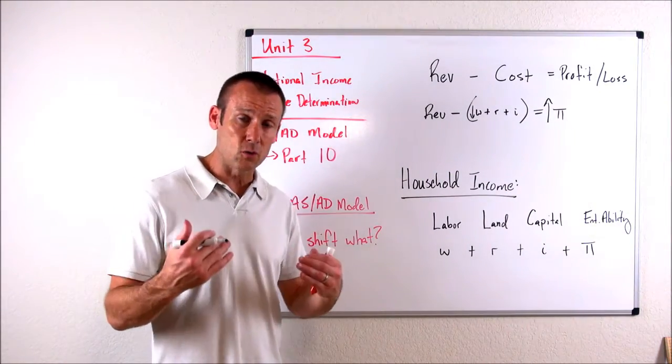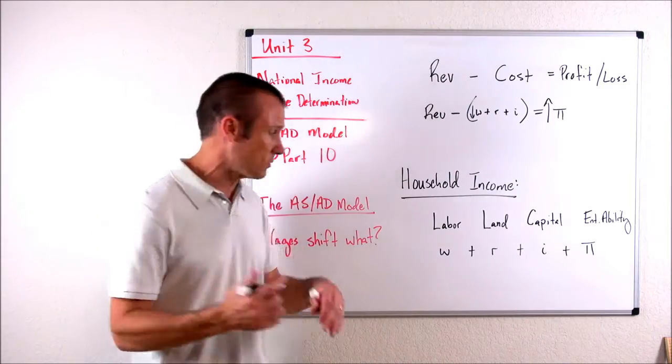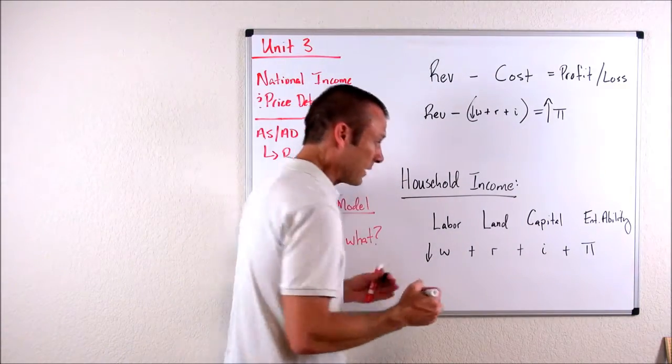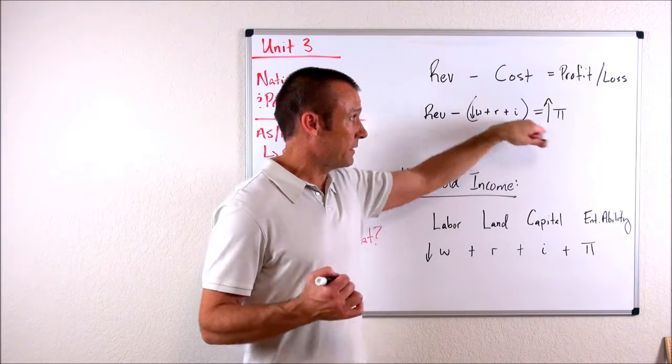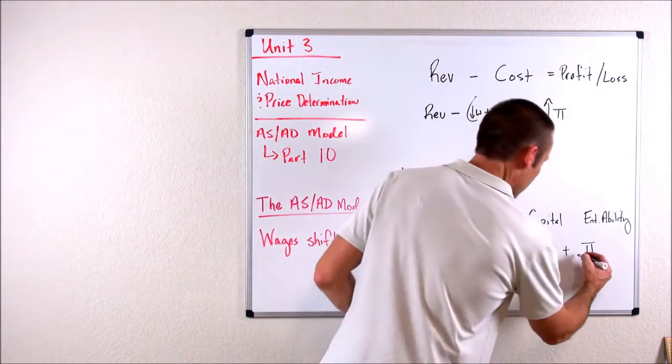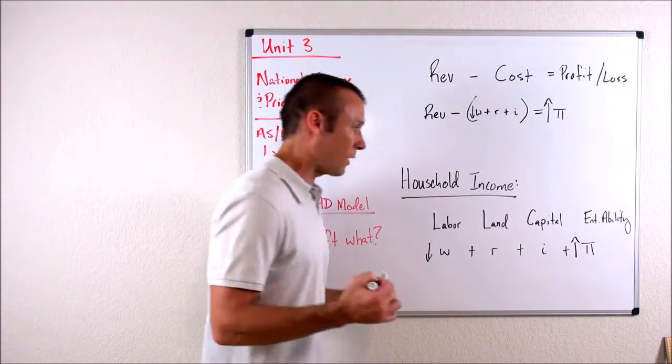So when wages go down, we need to understand based on what I wrote up here, that profitability is going to go up. And so the question is: what's going to happen to household income?